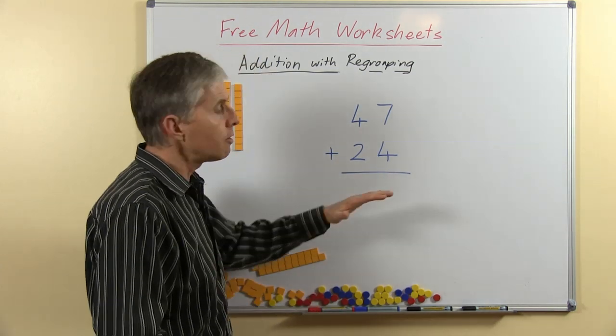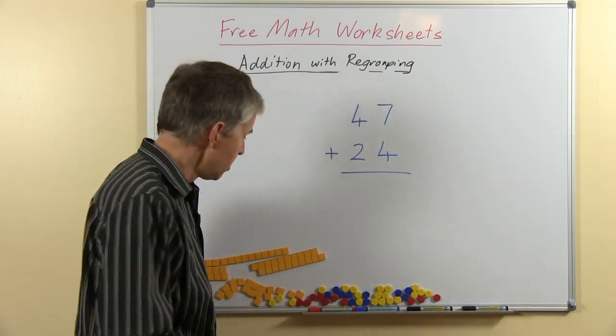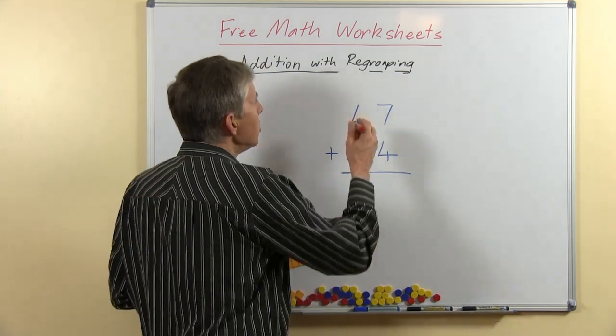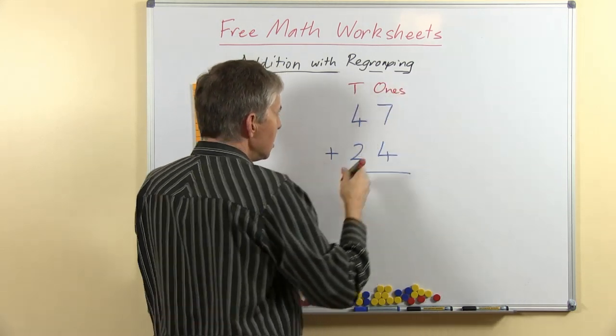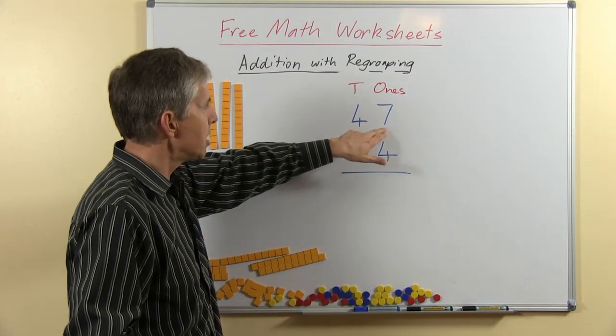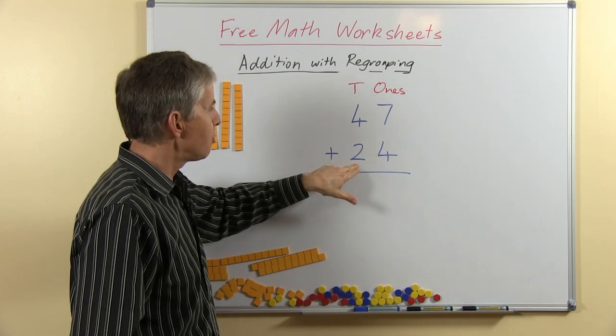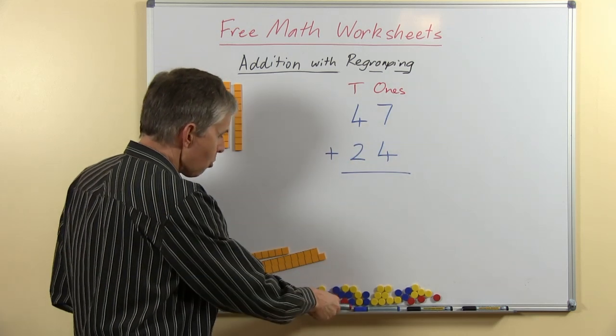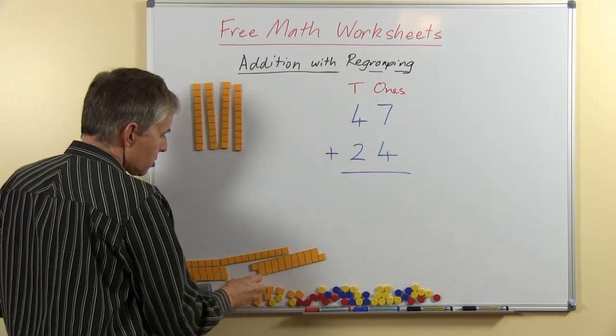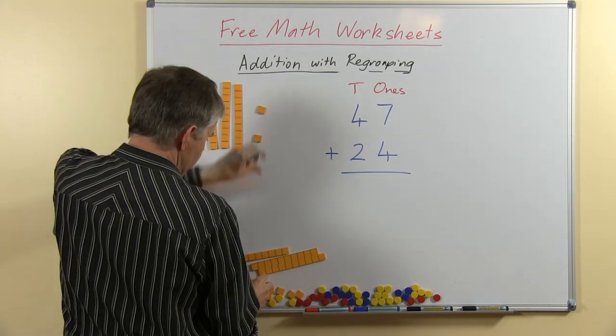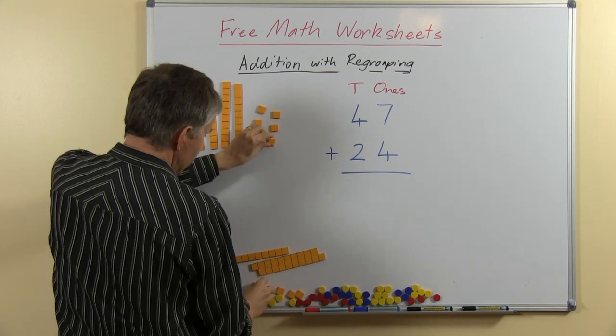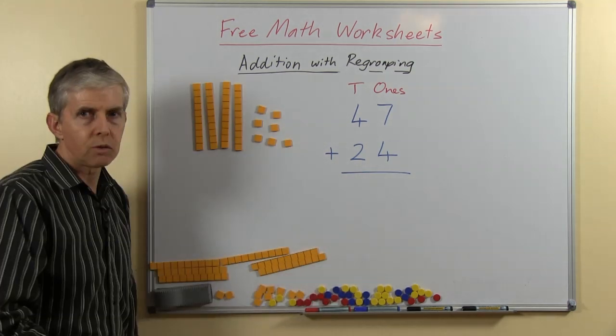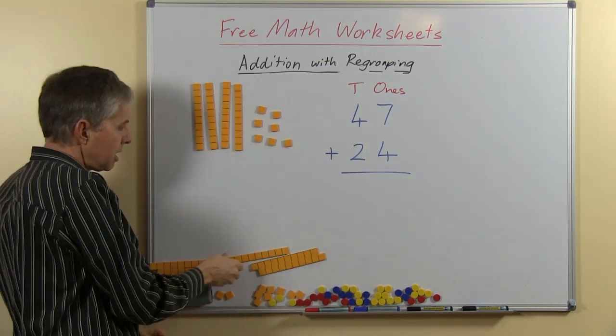So here's our question for today, 47 plus 24. Now you will know that this is the tens and these are the ones, so 47 is 4 tens and 7 ones, and 24 is 2 tens and 4 ones. I've put out the 47 already, I'm using my special magnetic place value blocks or base-10 blocks, they're my 7 ones, so you can see that shows 47.